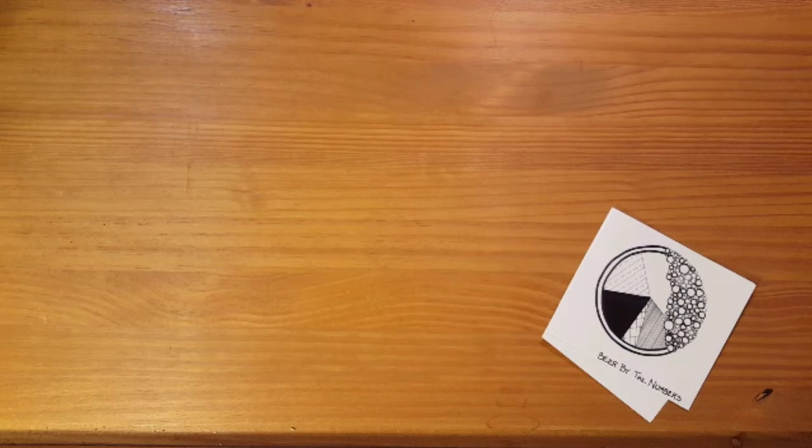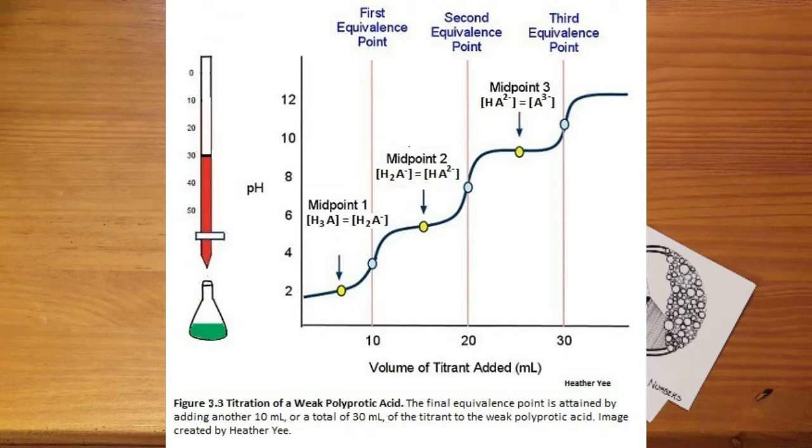Titration is really useful when it comes to measuring the acidity of a solution, which fortunately is what we're trying to measure in our sour beers.